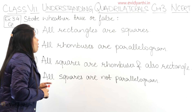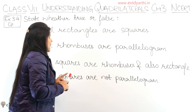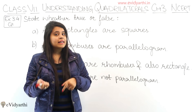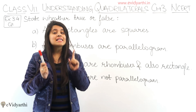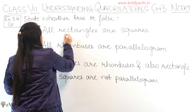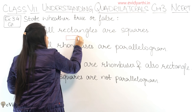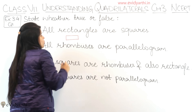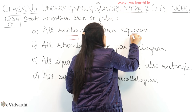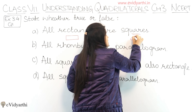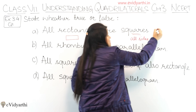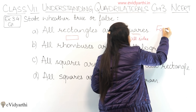The first statement is: all rectangles are squares — that means all rectangles are squares. This is false. Because in a rectangle, opposite sides are equal, but all four sides are not equal. Whereas in a square, all sides are equal. So this statement is false.